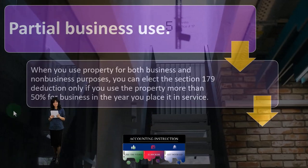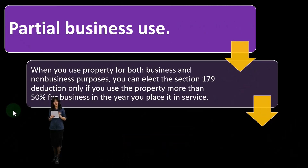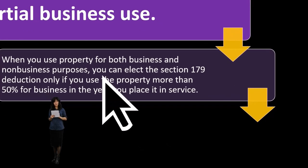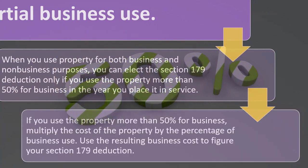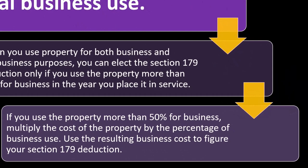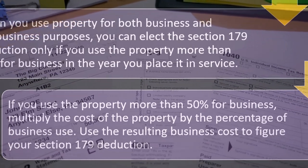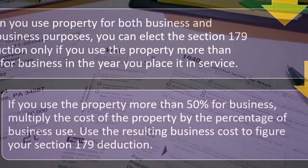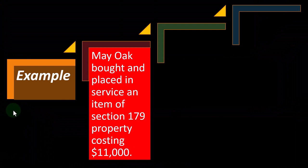Regarding partial business use: when you use property for both business and non-business purposes, you can elect the Section 179 deduction only if you use the property more than 50 percent for business in the year you place it in service. You must clear that threshold. If you do, multiply the cost of the property by the percentage of business use, and use the resulting business cost to figure your Section 179 deduction. You need to track the percentage of business versus personal use to properly calculate both the 179 deduction and normal depreciation.